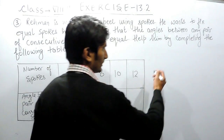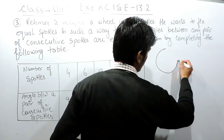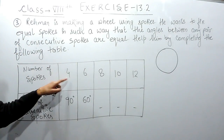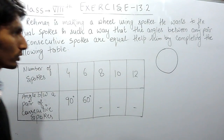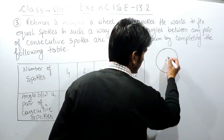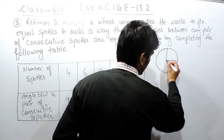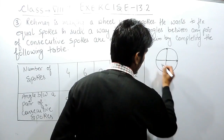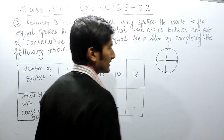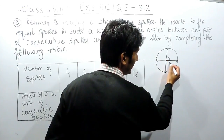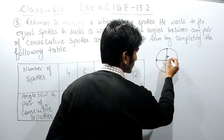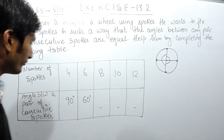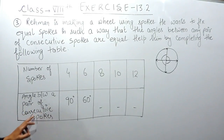Rahman is making a wheel using equal spokes. In the first case, he is using four spokes. If this is the center, there will be four spokes, and this is arranged such that the angle between any two consecutive spokes is equal. All these four angles are equal, so you have to find the angle between the pair of consecutive spokes.